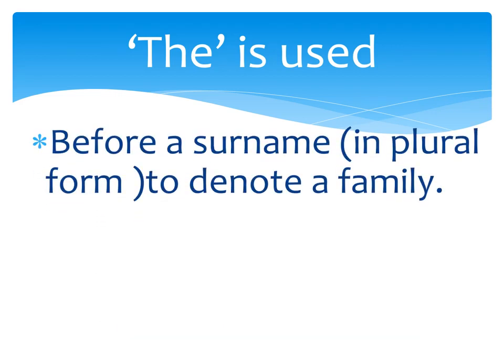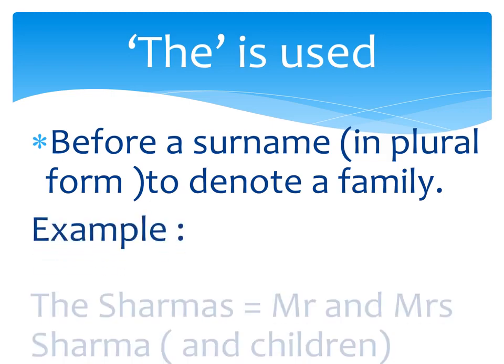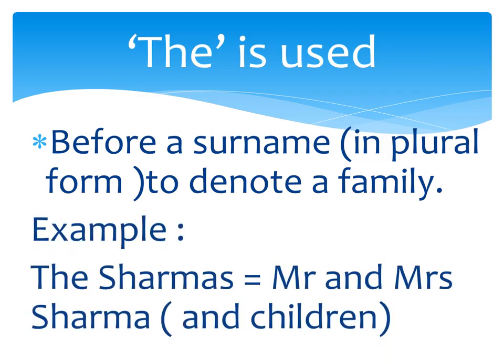Use number eleven: before a surname in plural form to denote a family. For example, the Shermas — meaning Mr. and Mrs. Shermas. Similarly, the Malhotras — meaning Mr. and Mrs. Malhotras, and their children are also included when we talk about the whole family using 'the.'